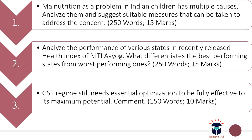Your second question is: analyze the performance of various states in the recently released health index of NITI AYOG — what differentiates the best performing states from the worst performing ones? The word limit is 250 and maximum marks are 15. Recently NITI AYOG released its health index ranking various states by health score. Kerala topped it and UP was the worst performing state, so you have to analyze this report and bring out the differentiation.